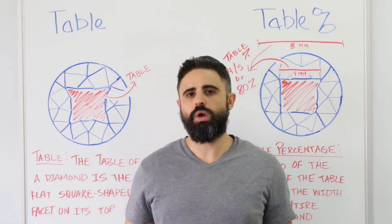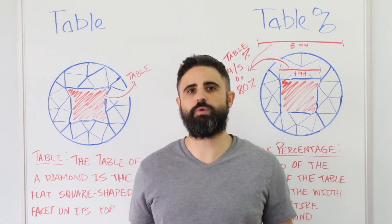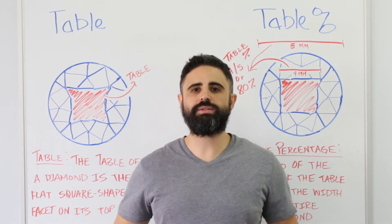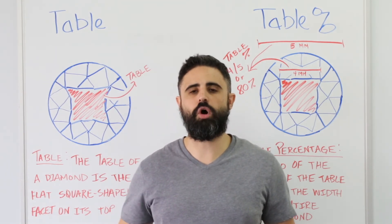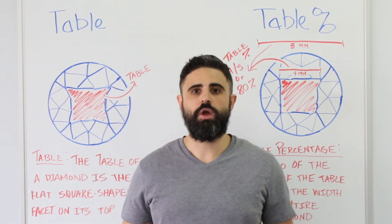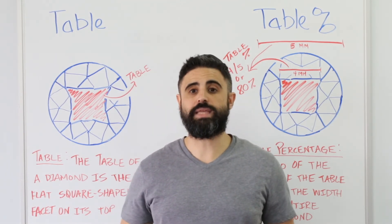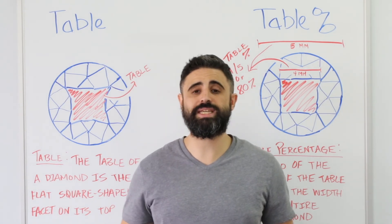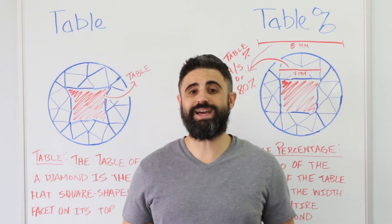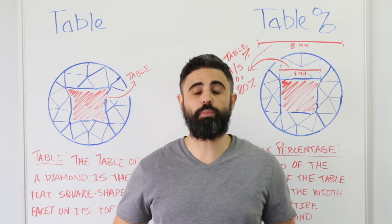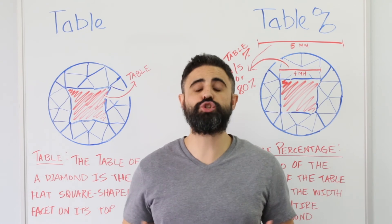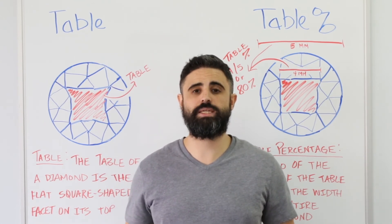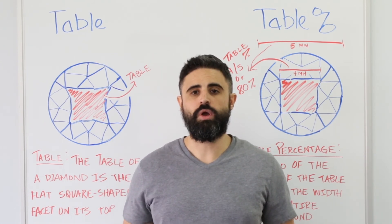So, what table percentage should you be looking for when buying a diamond? The ideal table percentage differs depending on the shape. For instance, the ideal table percentage for a round diamond is between 54 and 60%, whereas the ideal percentage for a princess cut or square diamond is between 66 and 74%.